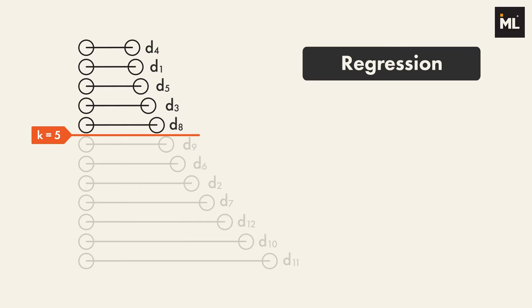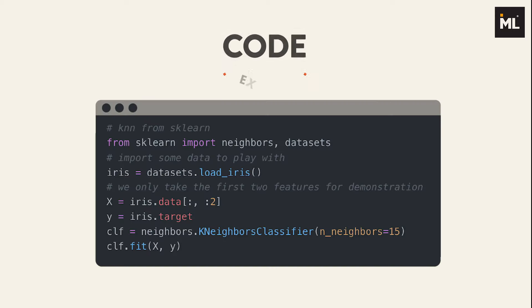For the regression problem, we simply return the average of the K-nearest neighbors' labels as a prediction. Here is a simple code example.